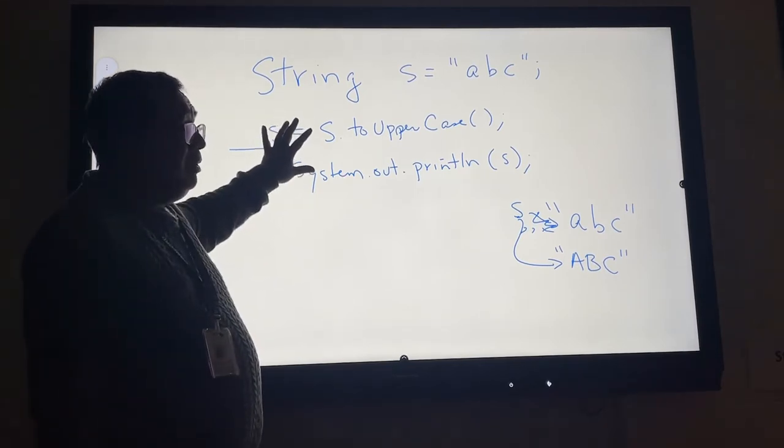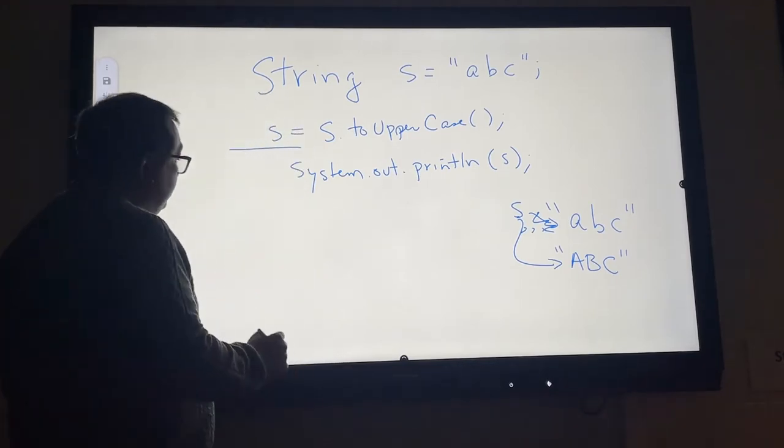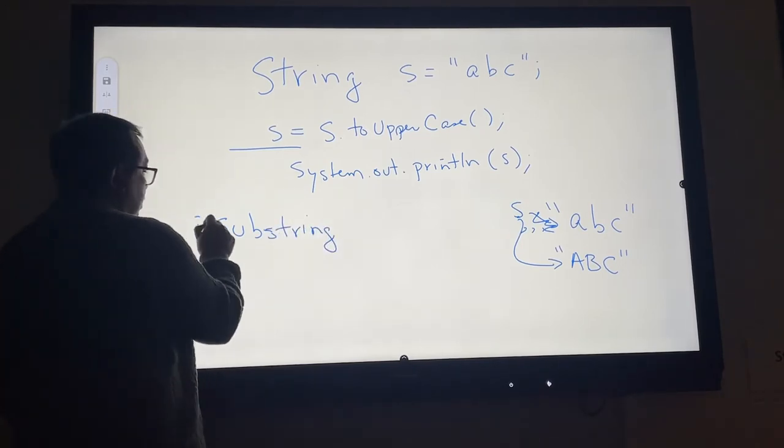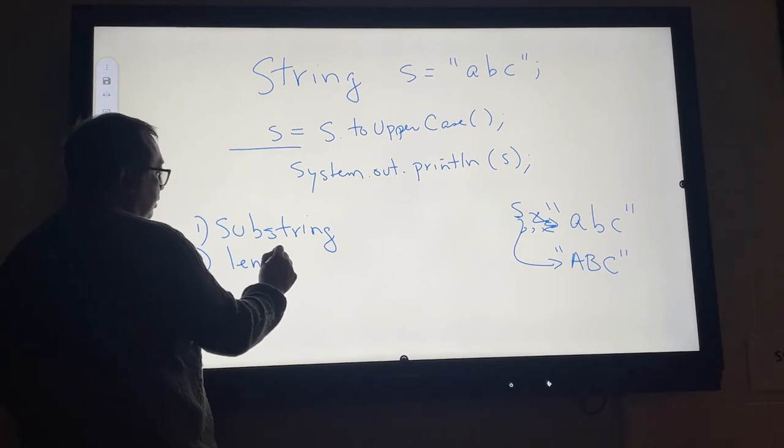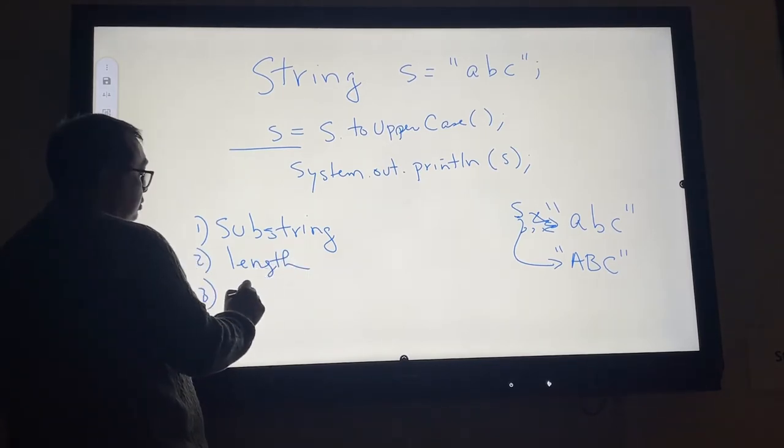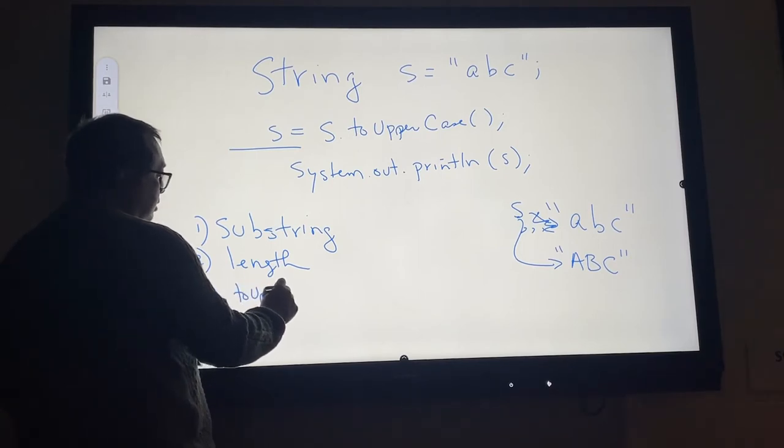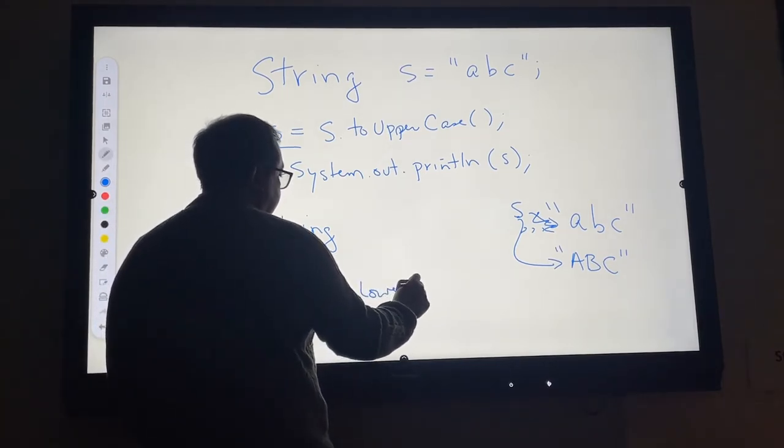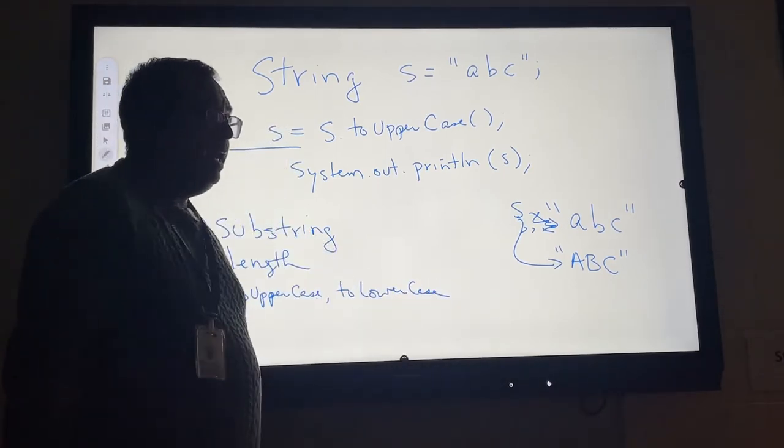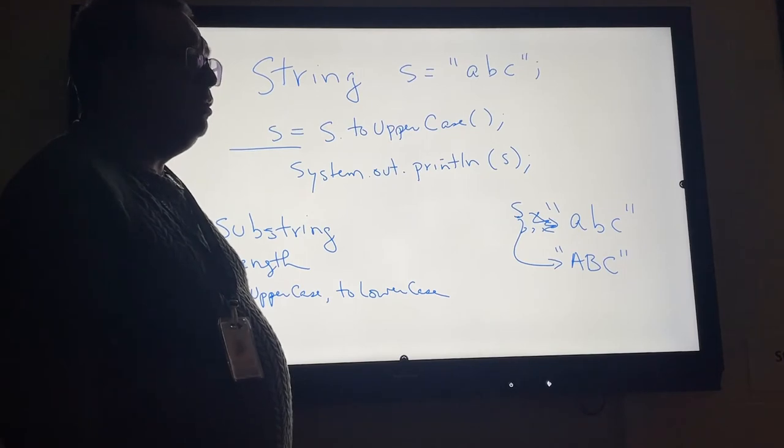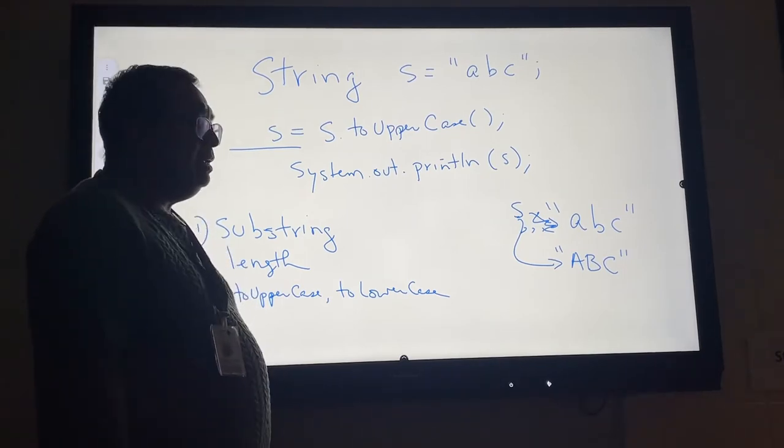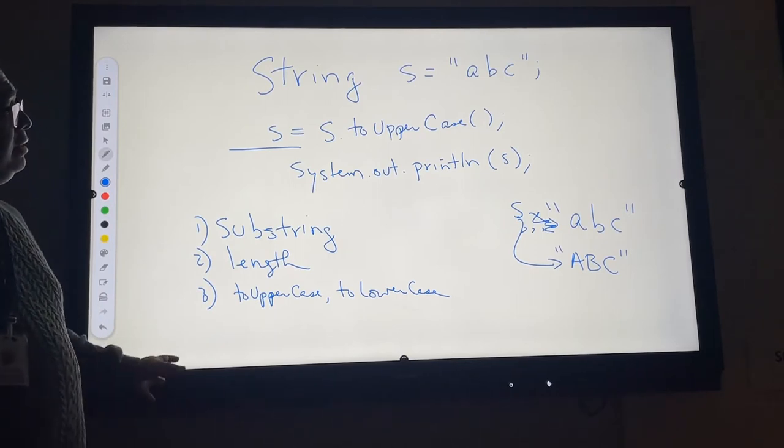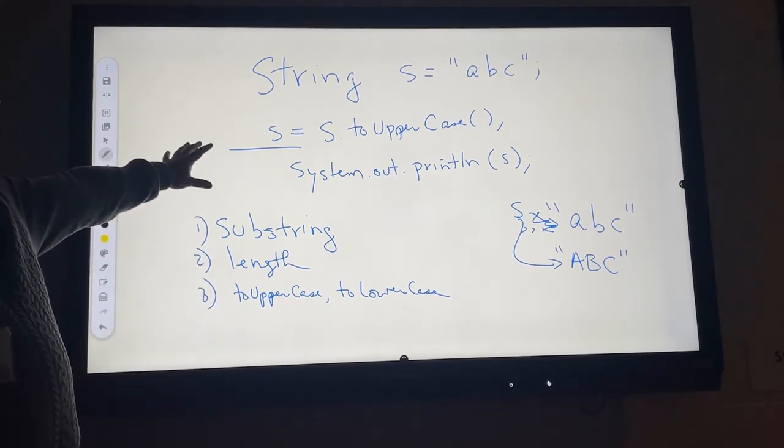So that's one of the really important parts of immutability. So these are the methods that we've gone over so far. We've taught you substring, length, and today I taught you toUpperCase. And there's also a similar method called toLowerCase, which I won't dwell on, but you can probably guess how that works. And now, I think there's only one additional one I'm going to go over today, and that one is called compareTo. That's listed as number four over there on that list on the board. Does anybody have any questions so far about this business?